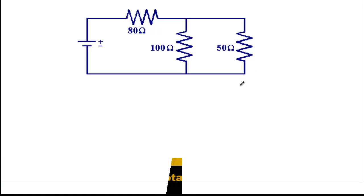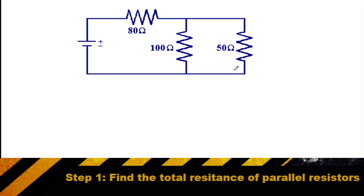This circuit is a bit more challenging because part of our circuit has resistors that are in parallel. So our first step is to focus in on the parallel resistors and find their combined resistance. Remember the formula for total resistance for resistors in parallel is 1 over the total is equal to 1 over the resistance in resistor 1 plus 1 over the resistance in resistor 2.